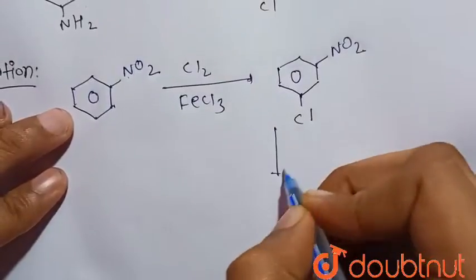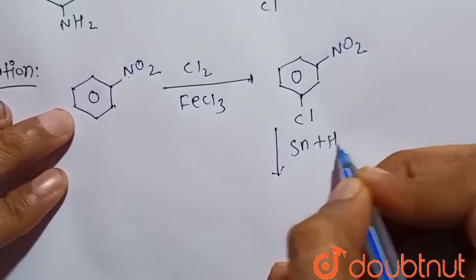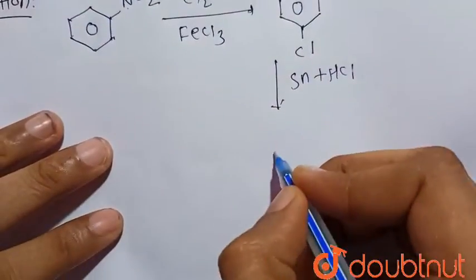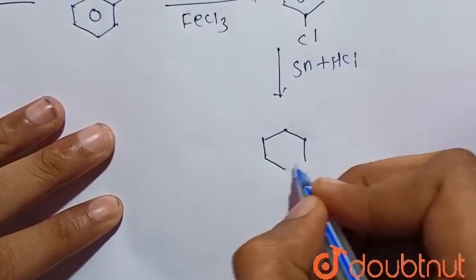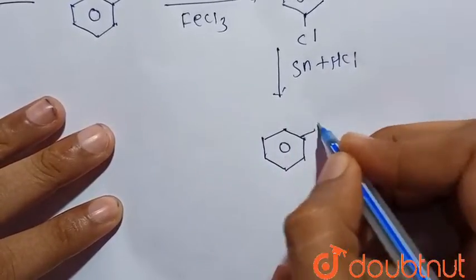Now it undergoes reduction, that is Sn plus HCl. So the NO2 group will reduce into NH2 group because Sn plus HCl causes the reduction.